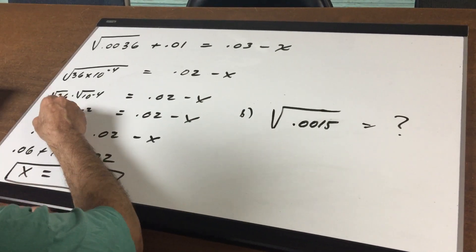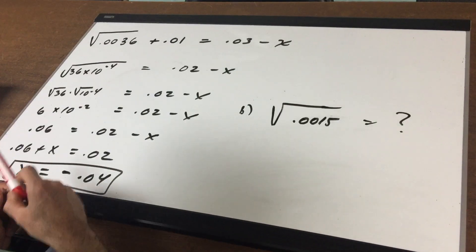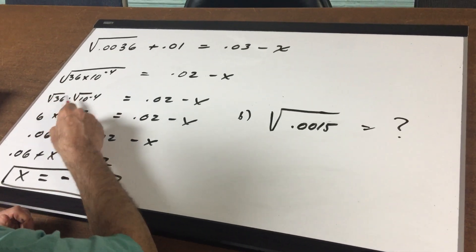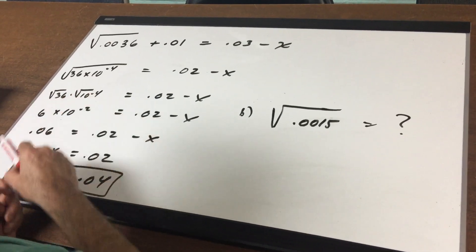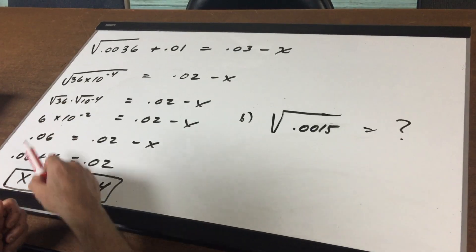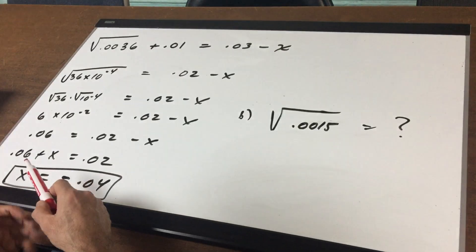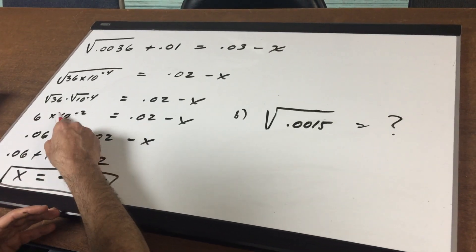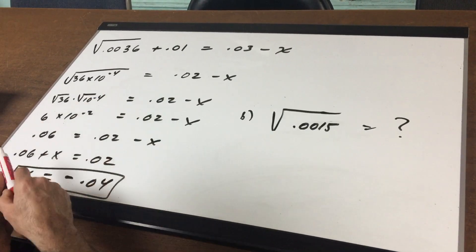I'm going to square root individually, so this becomes the square root of 36 times the square root of 10 to the minus 4th, and I keep the right side the way it is. Square root of 36 is 6, the square root of 10 to the minus 4th is 10 to the minus 2 - you cut it in half.